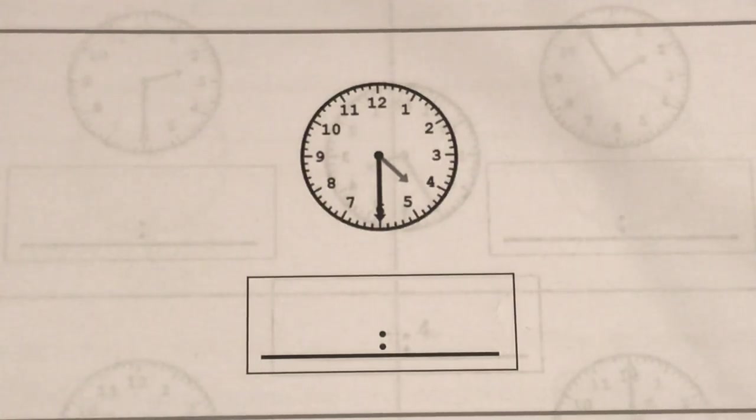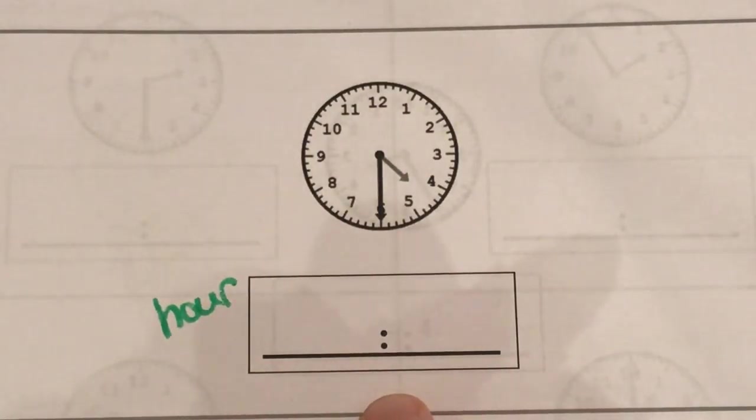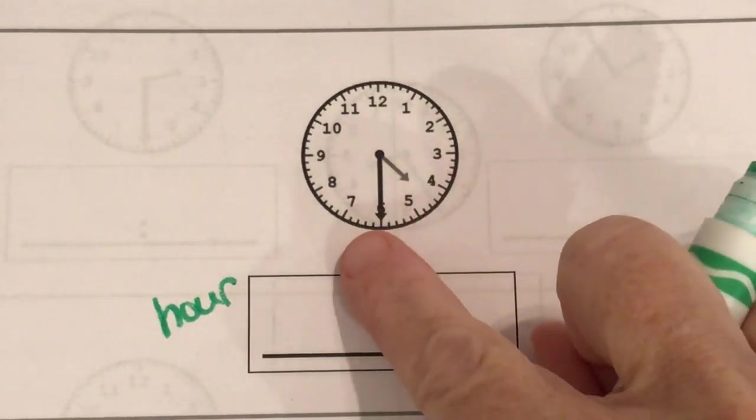So remember our steps are we always look for our hour hand first and then we write our hour hand on the hour side. So when I look at these which one is my hour hand?